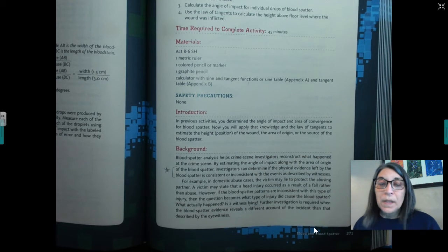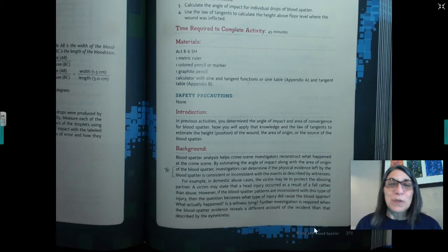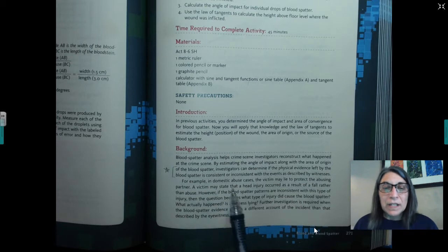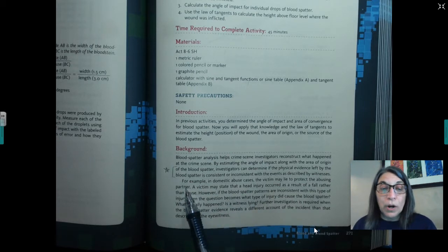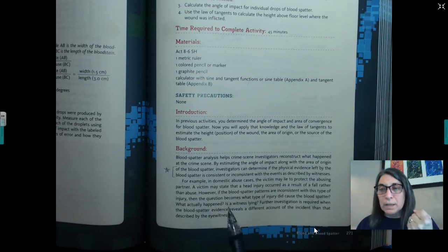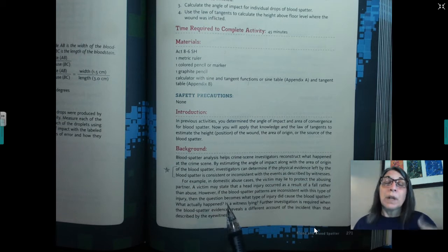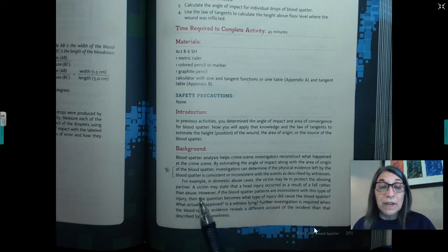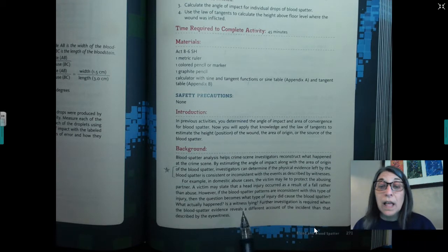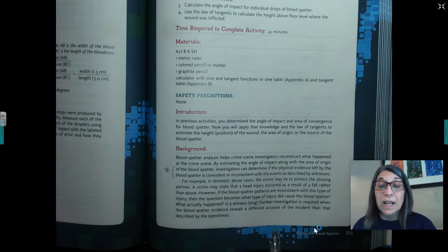I'm reading this because this may be important later when you answer some questions. Most of the information you need to answer your questions is always in the lab. You just have to go back and read it. So for example, it even gives you some examples in domestic abuse cases, the victim may lie to protect the abusing partner. Remember the opening case study that we read about the woman who said she fell down the stairs. There was blood on the wall and blood on her husband's fist. And so it wasn't consistent with the blood.